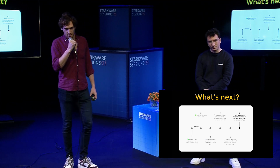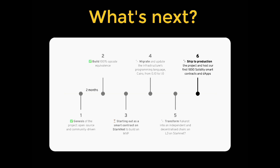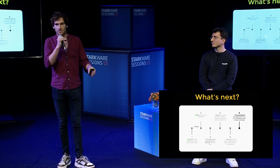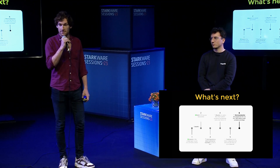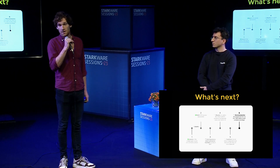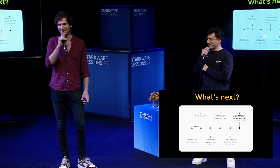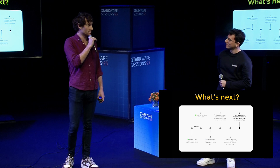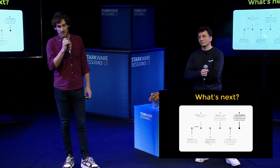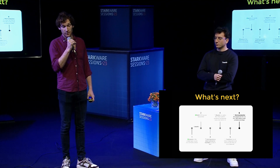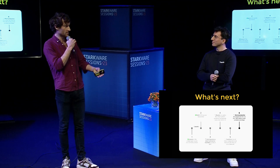Where we are today and what's next? We are not on the sixth step — we're on the third. Starting out as a smart contract on Starknet to build an MVP. This MVP is almost done, meaning right now we are about 70% done on the RPC node. The EVM interpreter itself is deployed on testnet and works, I would say, perfectly — we missed one precompile, the pairing precompile, and there might be some bugs somewhere. We'll be able to make end-to-end testing using MetaMask in about a month, maybe a month and a half.